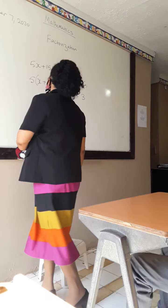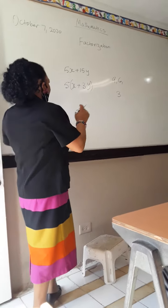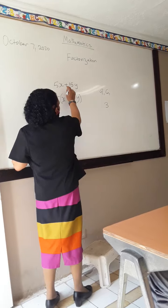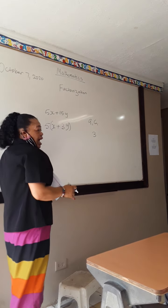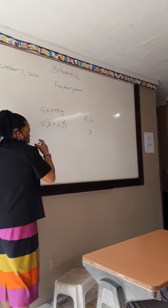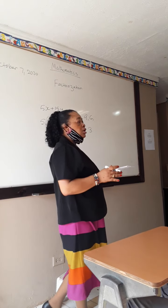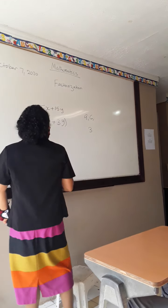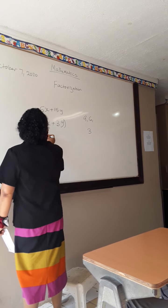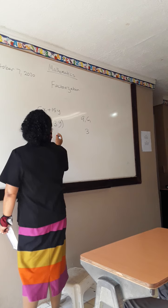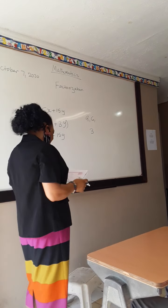What did I do? I find the common factor, or the highest common factor. 5 into 5x, 5 into 15 gives 3. Now I could test my results — this is what I normally do to test, to make sure when I'm finished factorizing that my answer is correct. I go back and multiply: 5 times x is 5x, plus 5 times 3y is 15y. So I'm going to get the same thing.